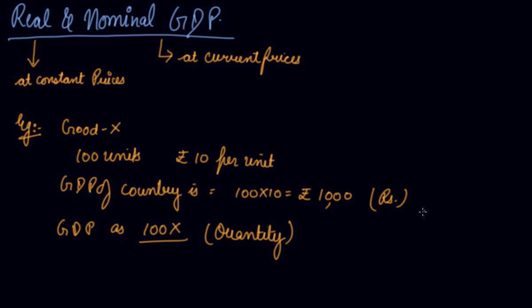When you express your GDP in terms of rupees, in monetary terms, you call it nominal GDP. When you express the GDP of a country in terms of quantity, you call it real GDP.